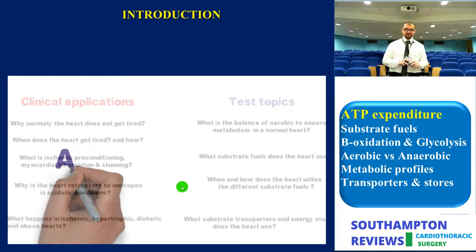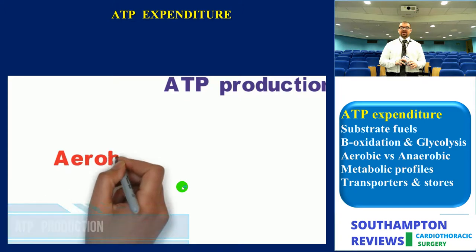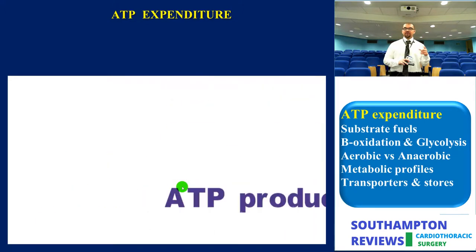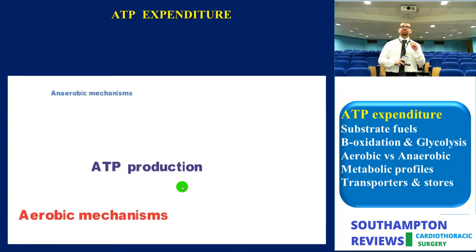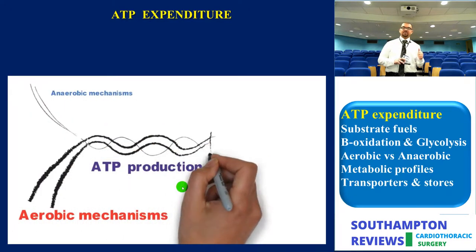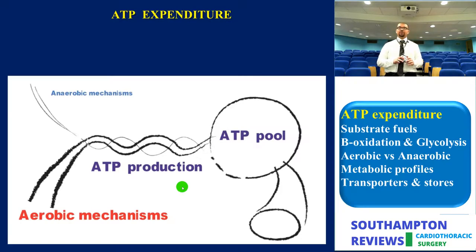Let's start with ATP production and expenditure. Understanding ATP economics explains the physiological basis of angina and post-operative low cardiac output states. Like any other muscle, there are two sources for ATP: aerobic and anaerobic mechanisms. However, in the myocardium, aerobic mechanisms are substantially overwhelming compared to anaerobic — as illustrated here with this braided rope. This is to avoid the formation of lactate during exercise; otherwise, you would get cramps in your heart muscle every time you run.